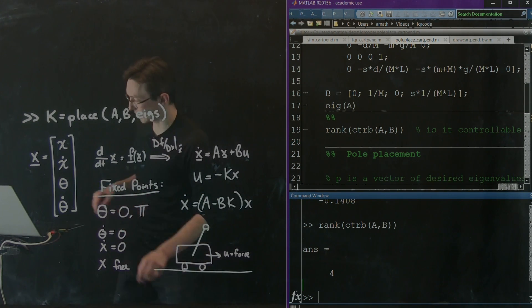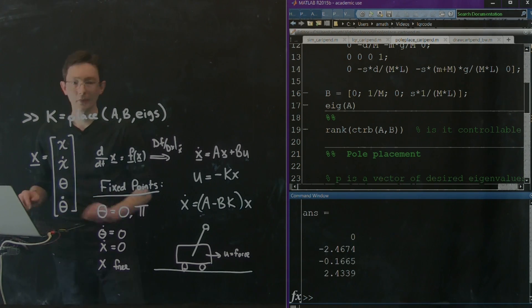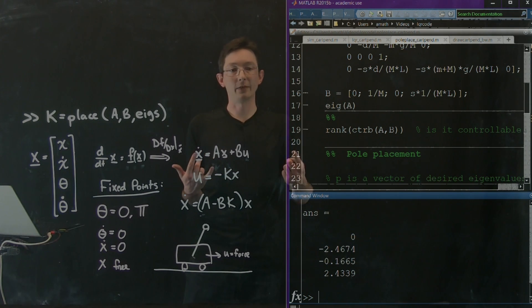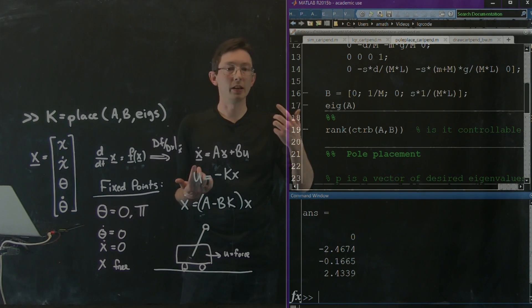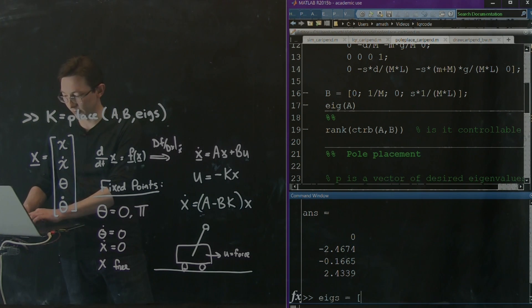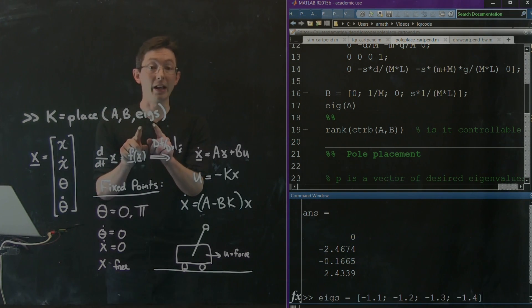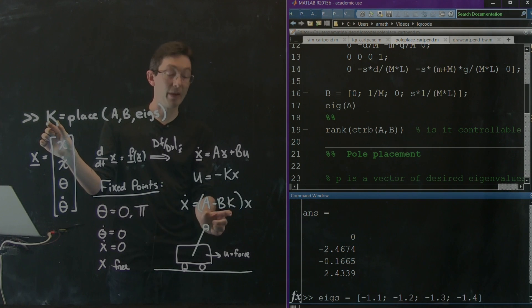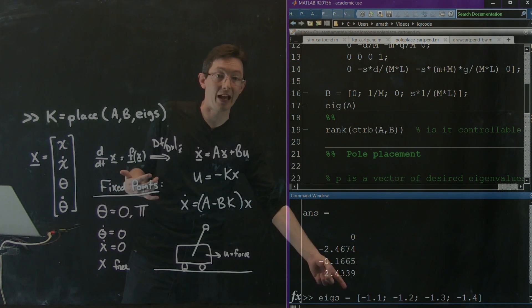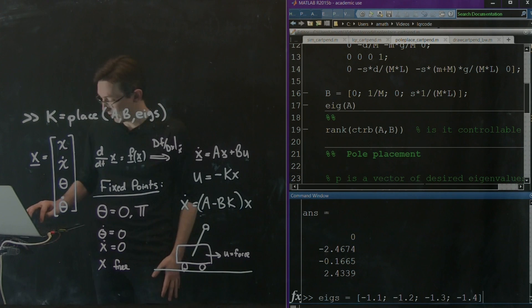We knew that the system, if I just look at the eig of A, we know that there's this unstable eigenvalue. So let's just manually say I want my eigenvalues to be like negative 1, negative 1.1, negative 1.2, and negative 1.3. So let's say eigs equals negative 1.1, negative 1.2, negative 1.3, and negative 1.4. So my desired eigenvalues, I want to cook up a k so that my closed loop system has those eigenvalues. And this seems like a lot to ask, right? I just pulled these out of a hat. They're stable eigenvalues. Should be great.